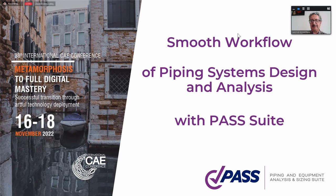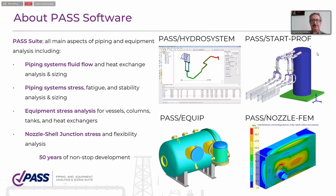Our plan for today is the following. First, I will do a short introduction, and then we will show you a live demonstration of workflow. Let me remind you about what the PASS software suite is. PASS software suite is a very powerful and complex suite that allows you to analyze all main aspects of piping and equipment of plants and all other different types of piping, and it consists of four main programs.